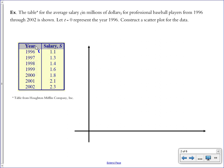So we have 0 representing 1996, then 1 is 1997, 2 is 1998, and so on. So we don't have to put those big numbers on the graph. We're asked to construct a scatter plot for this data.